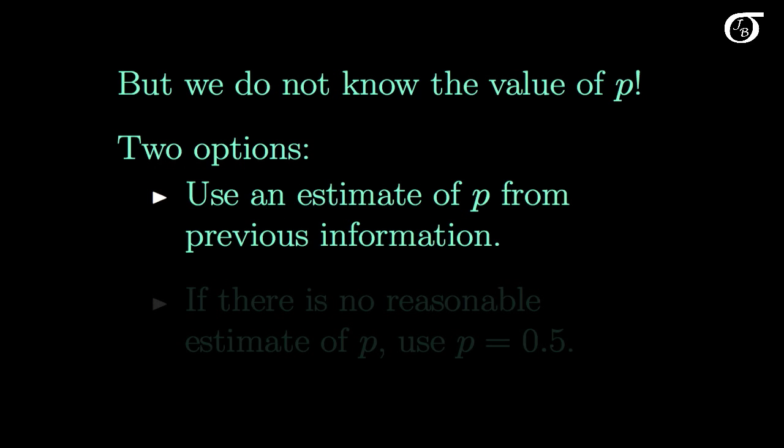We don't know the value of P, so we have two main options that we typically use. We can use some estimate of P from previous information. We might have investigated this type of thing before and have a pretty good idea that P lies between 0.1 and 0.2, or that P is really near 0.25, or something along those lines. We may have previous information that would allow us to have some sort of estimate of P to be used in the formula.